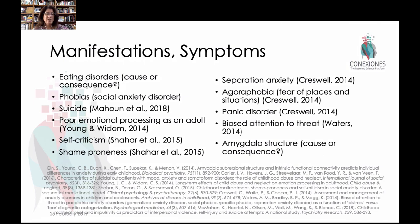Phobias also exist. Suicide can result with highly anxious people. Poor emotional processing as adults can be a direct occurrence of childhood anxiety disorder. The tendency to self-criticize, shame-proneness, separation anxiety, agoraphobia — which is a fear of places or situations — panic disorders, and an unnatural biased attention to threats where you pick up on threatening situations far more. Again, the physiological structure of certain circuitry related to the amygdala plays a very big role in emotional processing, but we don't know if that is a cause or a consequence.